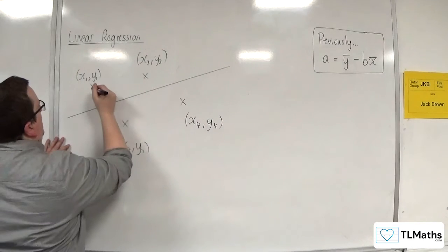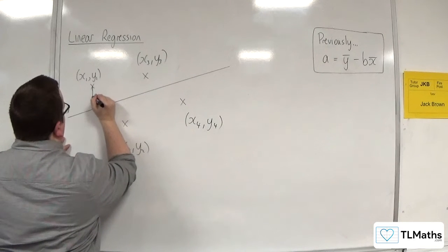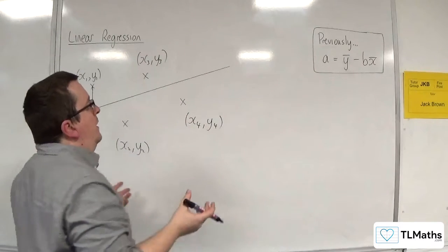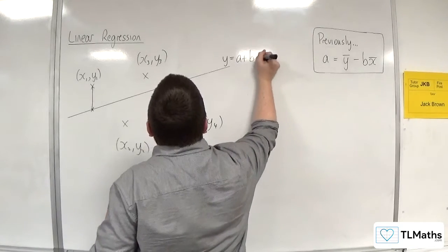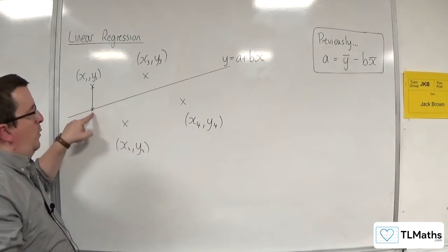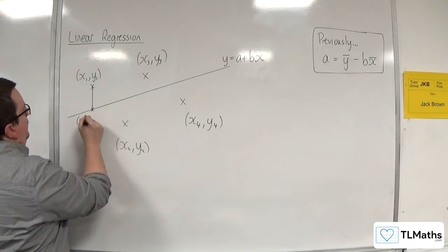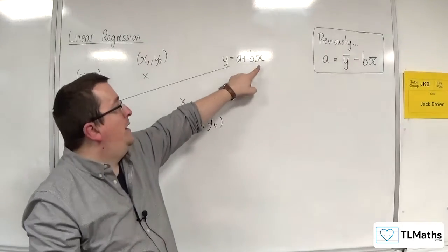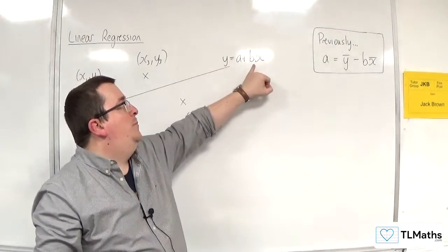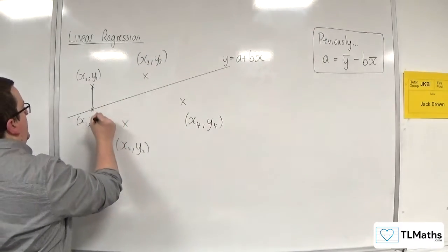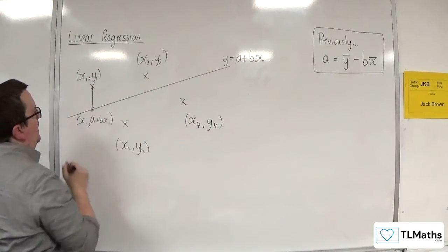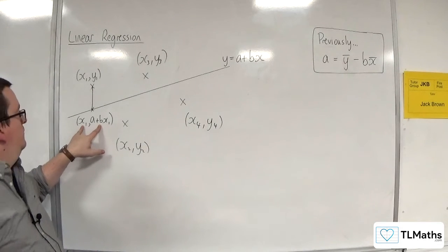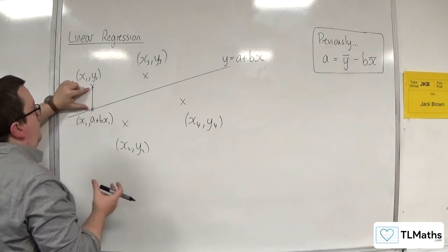What we can do is we can work out the difference — the vertical distance between the point and the line. Now the line is going to have some kind of equation, so y equals a plus bx would be my line. This point here would have the x-coordinate x1, and the y-coordinate can be calculated by substituting x1 into this, giving a plus b lots of x1. So essentially, the line is predicting values, and this is the predicted value at x1.